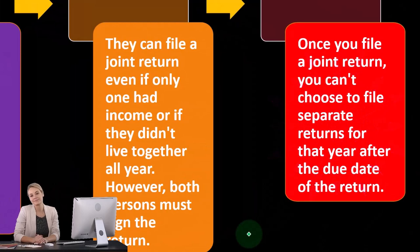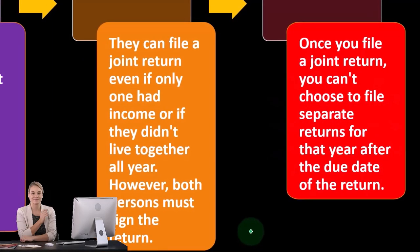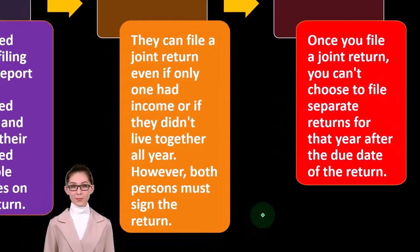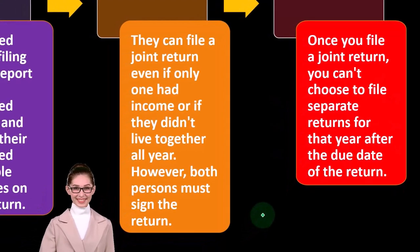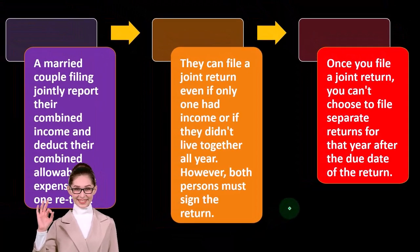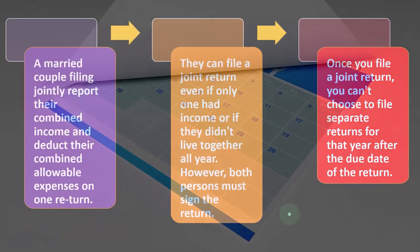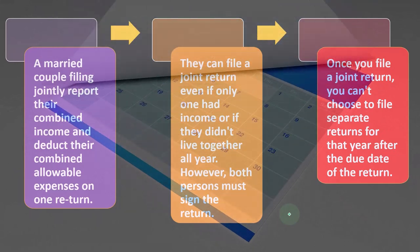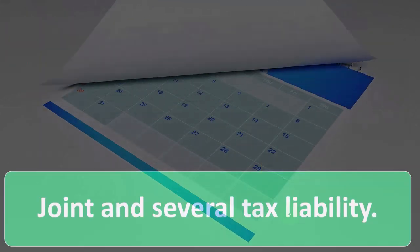Once you file a joint return, you can't choose to file separate returns for that year after the due date of the return. So once you file as married filing jointly, you're locked in for that year.